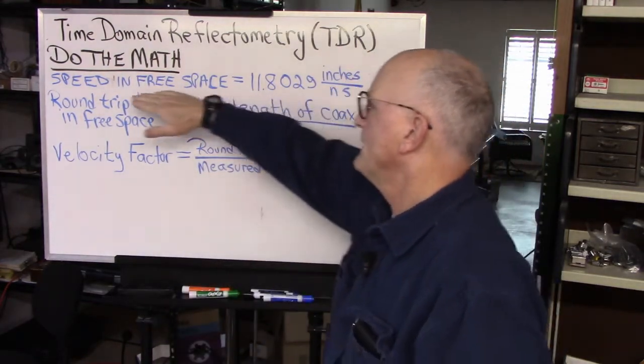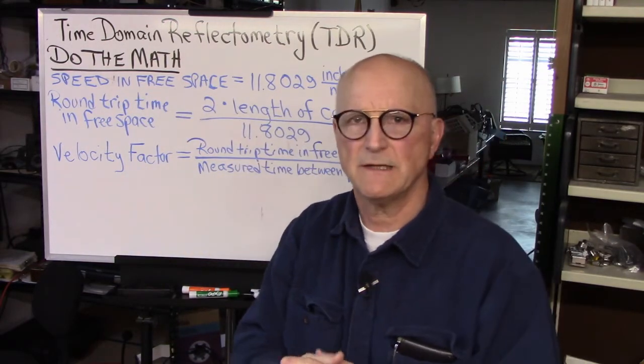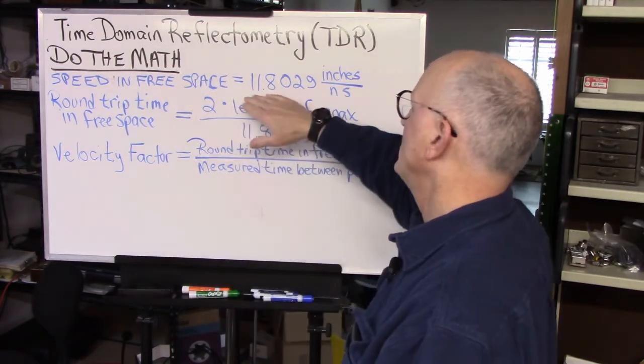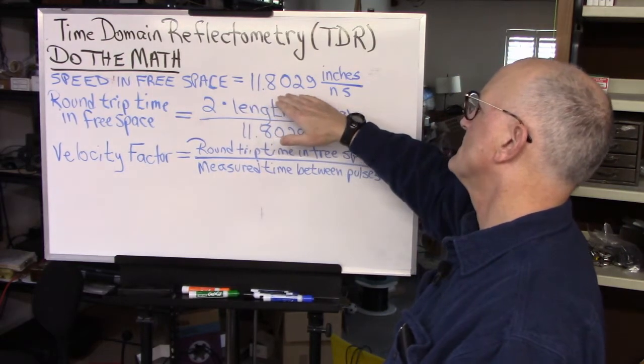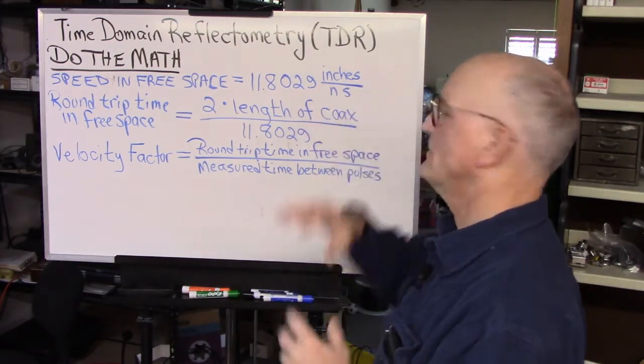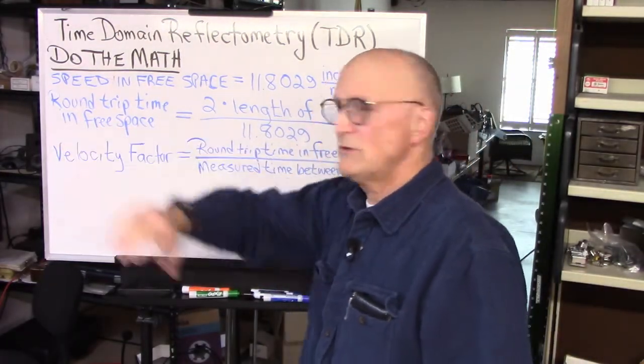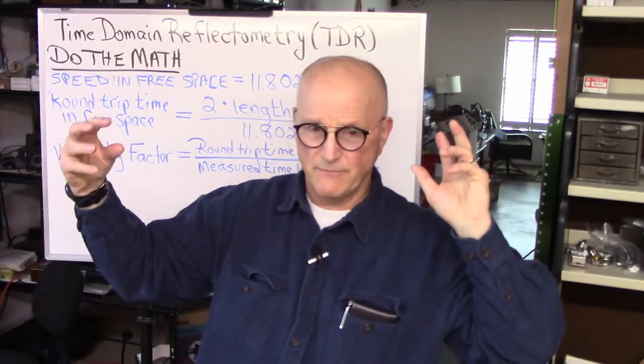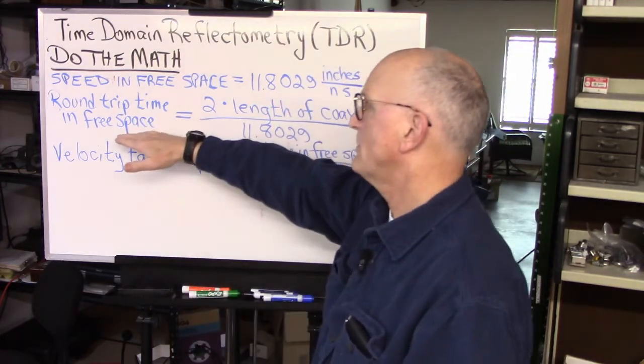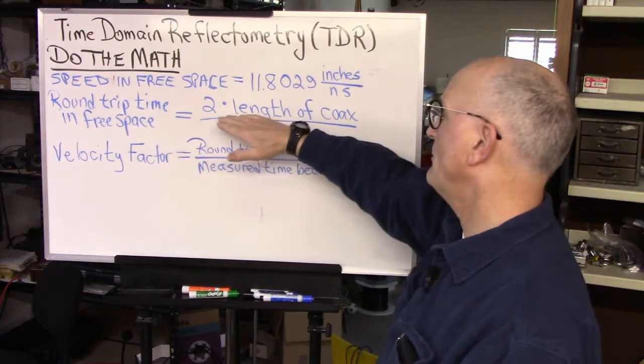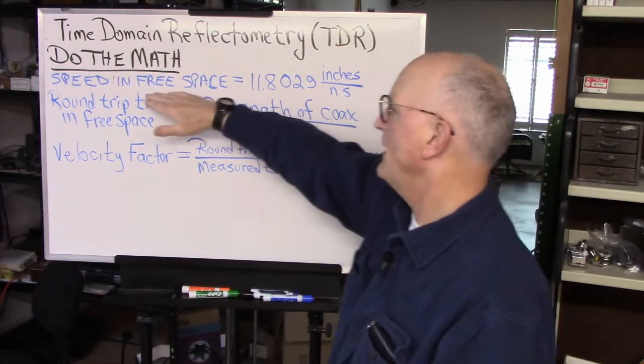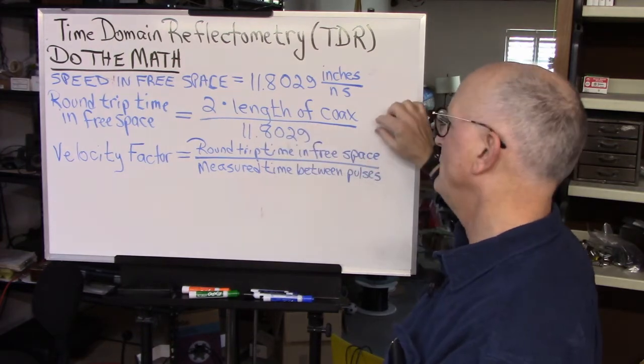Let's talk about do the math. First we remember that the speed in free space, that's an important thing because velocity factor has all to do with the speed in free space is equal to 11.8029 inches per nanosecond. You could probably shorten that to 11.8 inches per nanosecond. The round trip time, if you had a piece of transmission line that had a velocity factor of one, the round trip time in free space would be equal to two times the length of the piece of transmission line divided by the speed in free space, and that gives you nanoseconds.